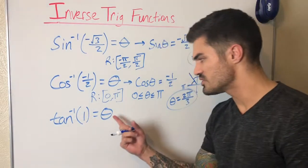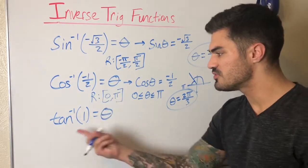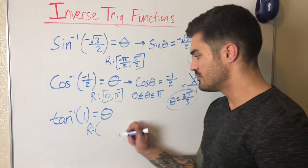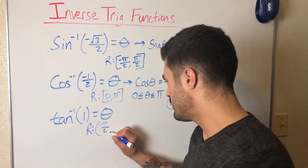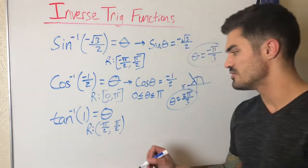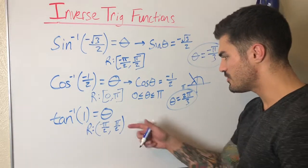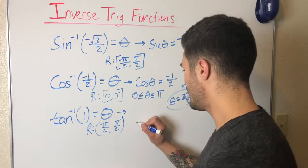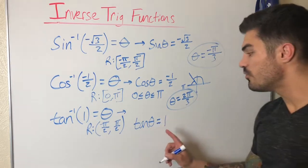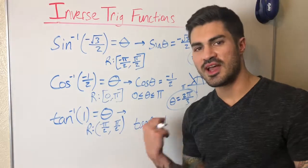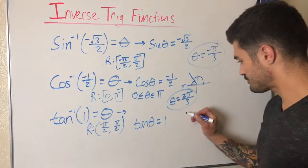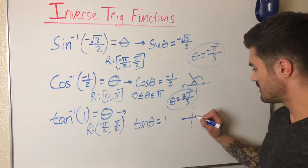For tangent inverse of one, equals theta. The range for tangent inverse is the same as sine — from negative pi over two to pi over two — but we are not including negative pi over two or pi over two, because those are asymptotes on the tangent graph. So where is tangent equal to one? I'll rewrite it: tangent of what angle equals one? Tangent can be written as sine over cosine, so if sine over cosine equals one, then sine and cosine have to be the same value.